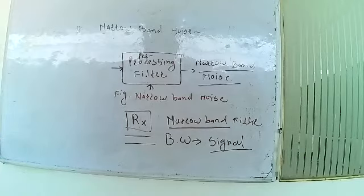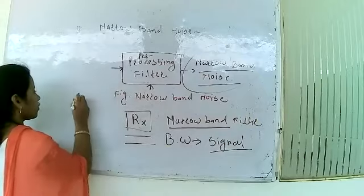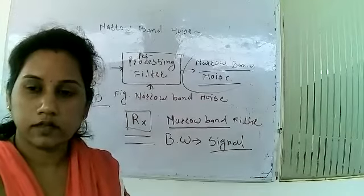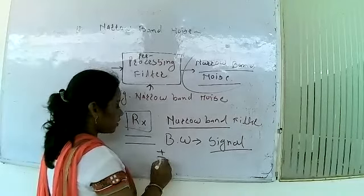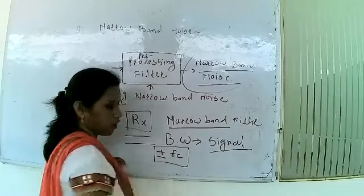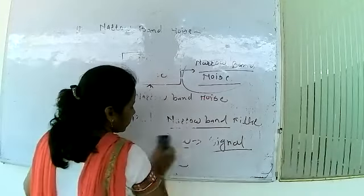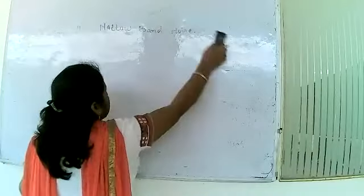After that we will see the power spectral density of narrow band noise. Whatever the output of the filter, it is nothing but narrow band noise, and now we will see the power spectral density (PSD) for that. The frequency components for this power spectral density contain components at plus and minus the mid-frequency FC. The spectral components of narrow band noise are concentrated above some mid-band frequency, denoted ±FC.